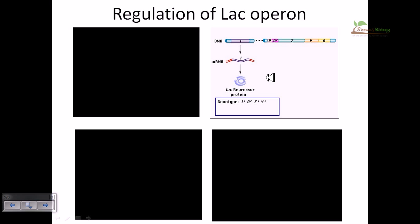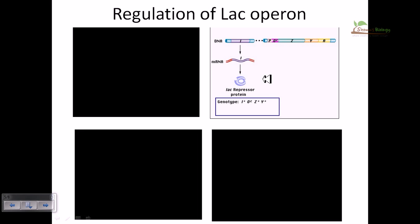In the second animation, we see another level of regulation. Here the repressor gene (I) is wild type, but the operator is mutated in such a way that it cannot bind with the repressor protein. The structural genes Z, Y, A are also wild type — only the operator site is mutated. Since the repressor cannot bind the operator, the operon system will be transcribed continuously — this means constitutive transcription.